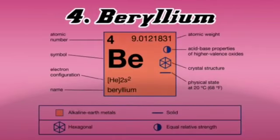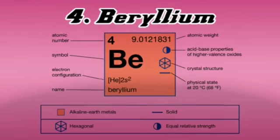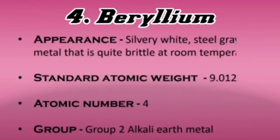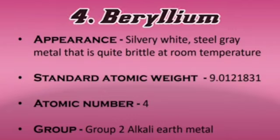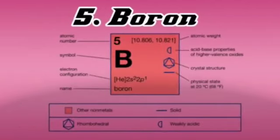The next element is Beryllium. Beryllium is a lustrous, relatively soft metal of group 2. It is a silvery-white, steel-grey metal that is quite brittle at room temperature. Its standard atomic weight is 9.0121831 and its atomic number is 4. Its group is 2, alkali earth metal.